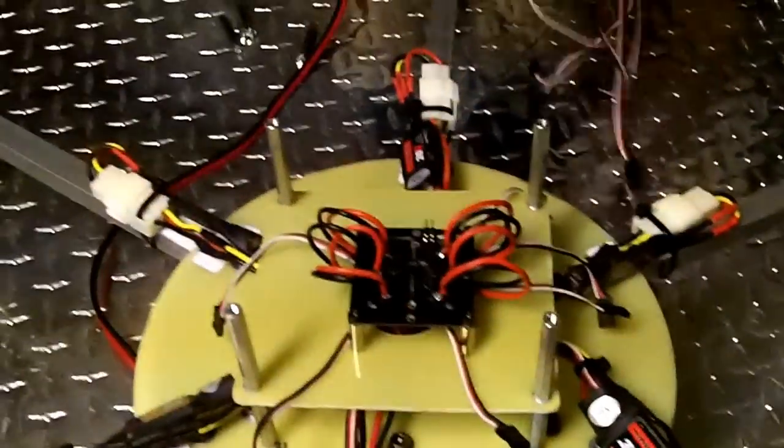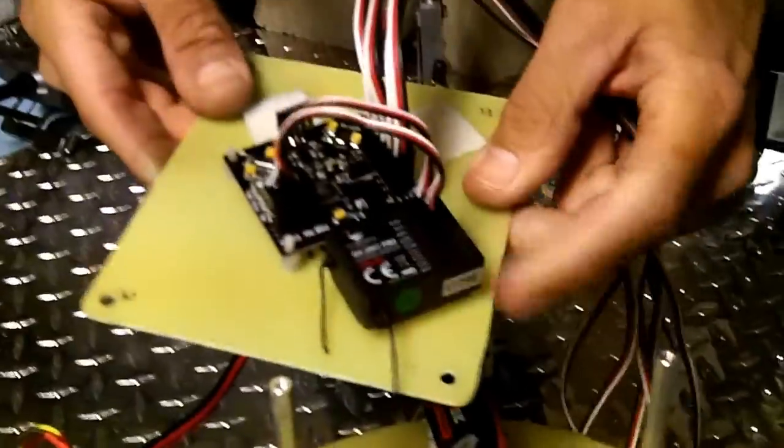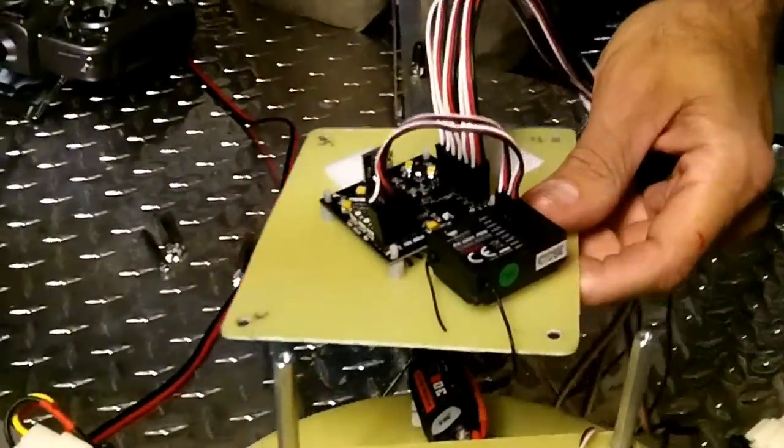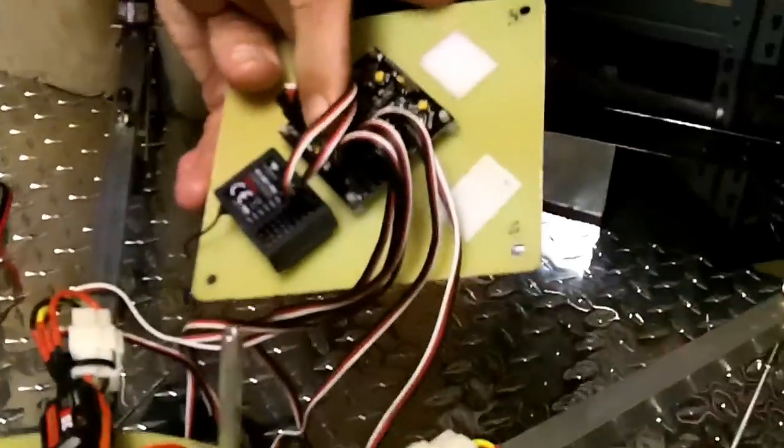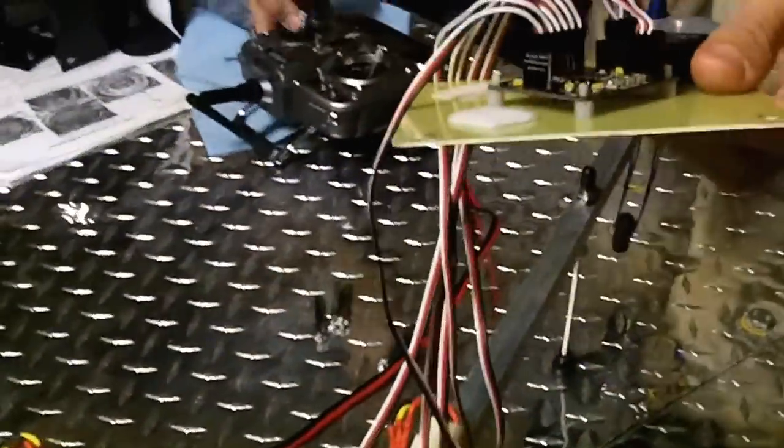Now I got my receiver, it's an eight channel receiver. I can put all kinds of stuff on that. The only channels I need is the first four, so I got my elevator, my aileron, my throttle, and my rudder on this thing here.